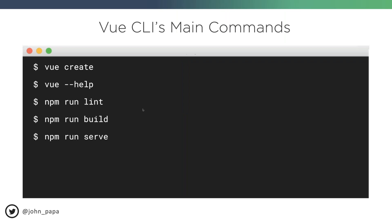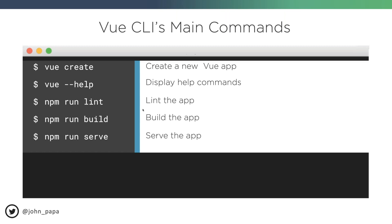Here are some basic CLI commands: 'create' to create an app, '--help' to get help, linting to lint and fix your code, and 'build' to generate a production-ready app with minification and cache-busting already baked in. One difference from Angular's CLI is that Vue builds production-ready by default — in Angular you need to pass the production flag. For local development, use 'npm run serve', which builds in memory for fast debugging.